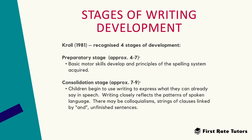The next stage, taking place at approximately seven to nine years old, is called the consolidation stage. Children at this stage begin to use writing to express what they can already say in speech, and their writing closely reflects the patterns of spoken language. There may be colloquialisms — slang and casual language — strings of clauses linked by 'and', as well as unfinished sentences, all very typical characteristics of their writing during this age.